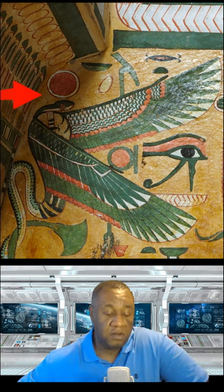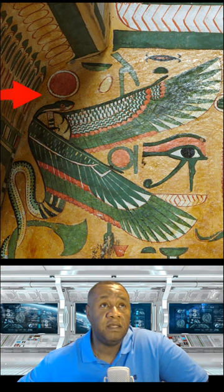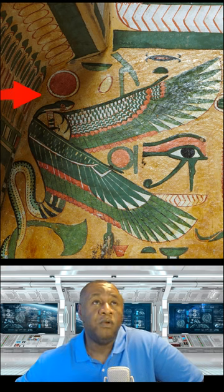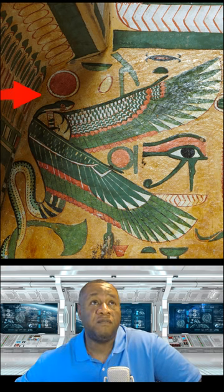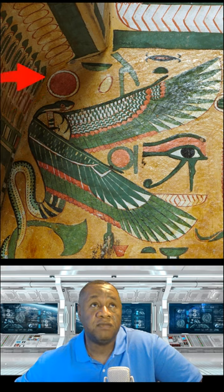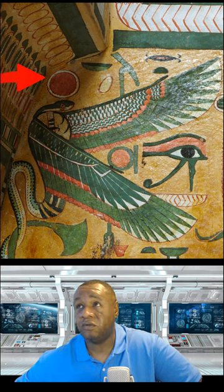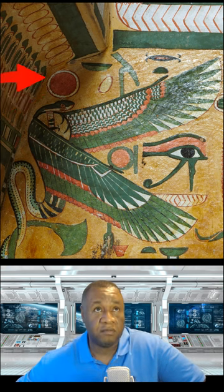In this image we see the goddess Neith in the winged uraeus form. We see lots of symbols here, and the first symbol — if you see my arrow — is the solar disk, which is obviously a symbol of power.